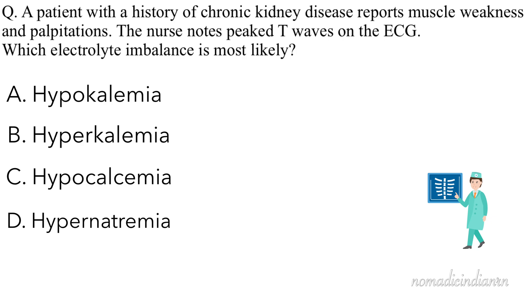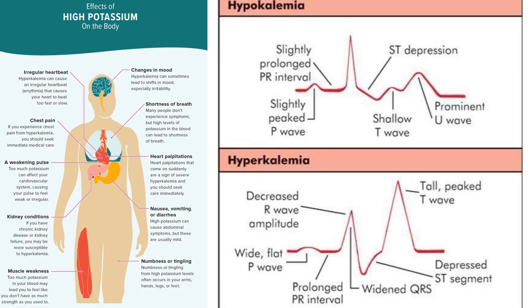Pause the video, think about the answer and then resume. The answer is B — hyperkalemia. Peaked T waves on an ECG are a classic sign of hyperkalemia. Patients with chronic kidney disease are at risk for elevated potassium levels due to impaired renal excretion.